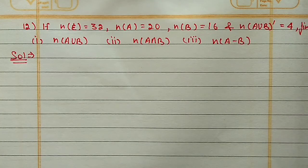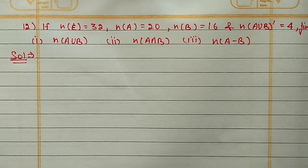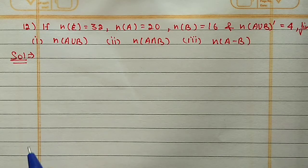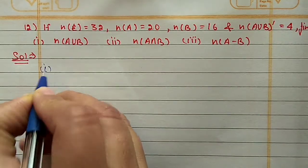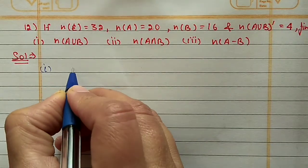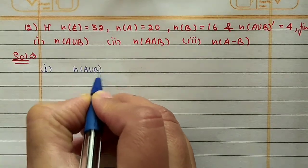Question 12: N(U) = 32, N(A) = 20, N(B) = 16, N((A∪B)') = 4. Find N(A∪B), N(A∩B), and N(A - B). For the first part, we use the fifth property: N(A∪B) + N((A∪B)') = N(U).